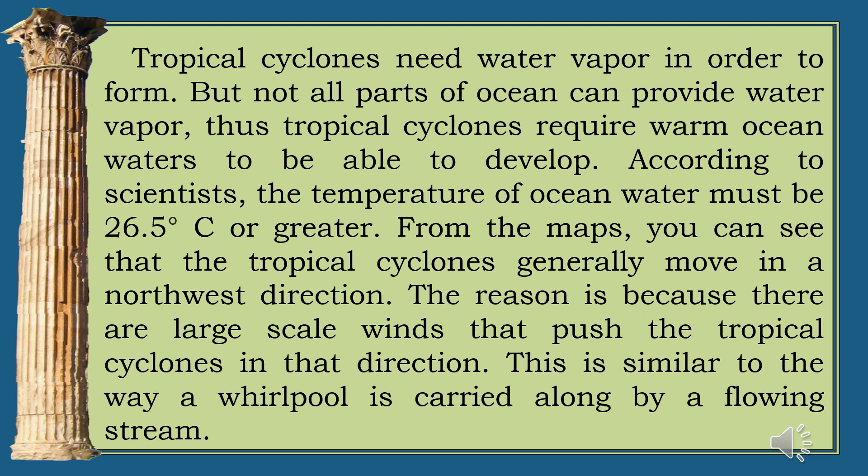From the maps, you can see that tropical cyclones generally move in a northwest direction. The reason is because there are large-scale winds that push the tropical cyclones in that direction. This is similar to the way a whirlpool is carried along by a flowing stream.